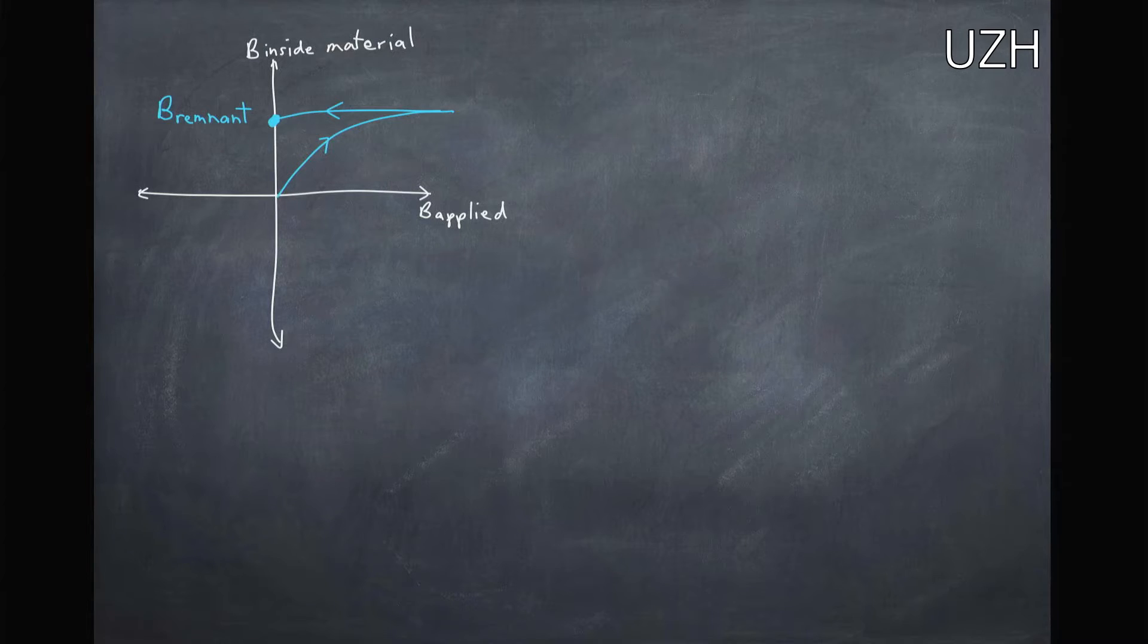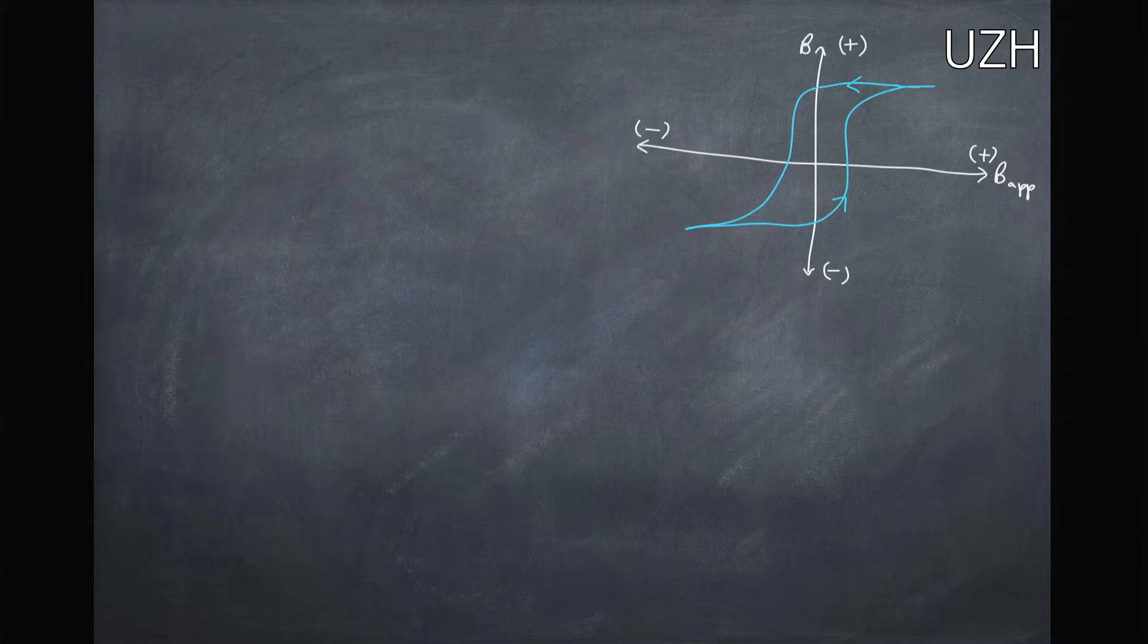Now what we can do is keep flipping this applied field and see what happens to the magnetic field in the material. And we come up with a curve that looks like this. When we're at our maximum applied field, we're at our maximum field inside the material. We decrease B applied, we keep decreasing it, and finally it reverses the magnetic field in the material. It gets to a maximum value, and we can do the same in the opposite direction. And we keep basically producing this.